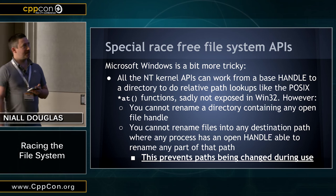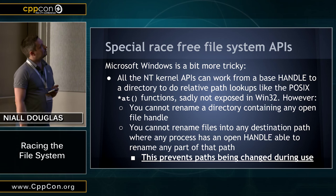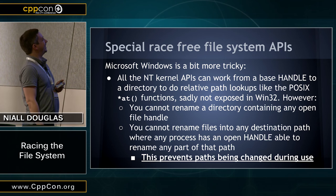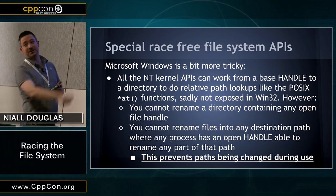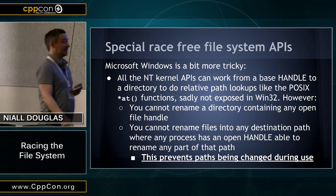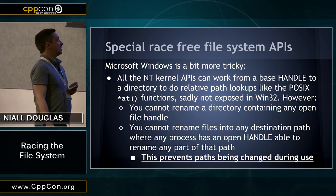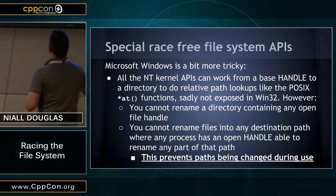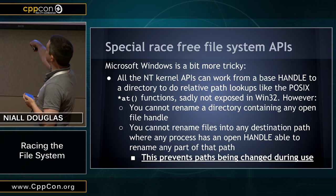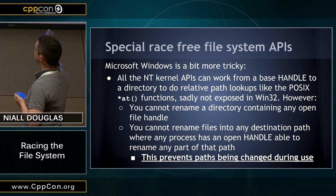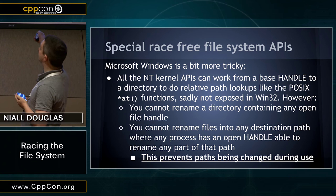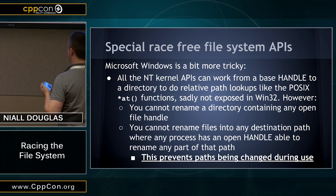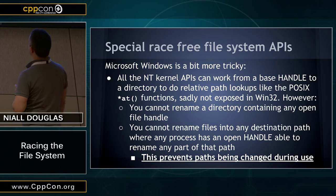Microsoft Windows, if you skip the Win32 layer — which you want to because it's terrible — and go straight to the NT kernel API, which is fully available to user-space processes and is documented, you can program the NT kernel with no Win32 at all. It has the same functionality as POSIX: you can pass in base handles to a directory and do relative path lookups. It's a really beautifully designed API. I really wish POSIX had copied what Windows NT did.